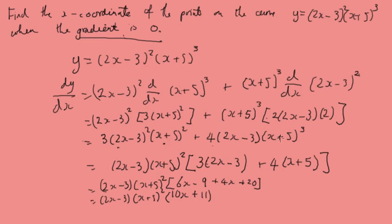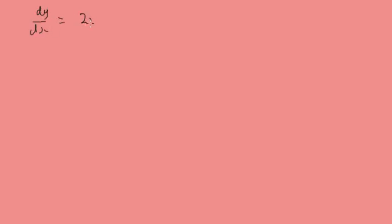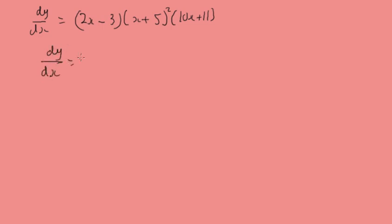We had dy by dx equal to (2x minus 3)(x plus 5)(10x plus 11). What we wanted was the x-coordinates for the points when the original curve had a gradient of 0, so when dy by dx equals 0.